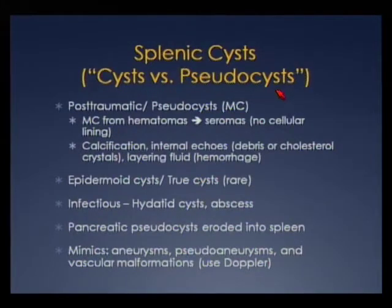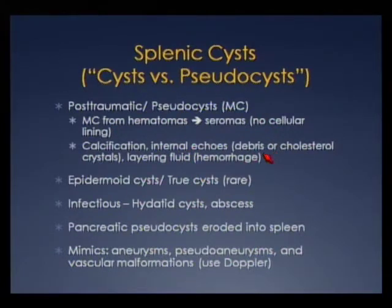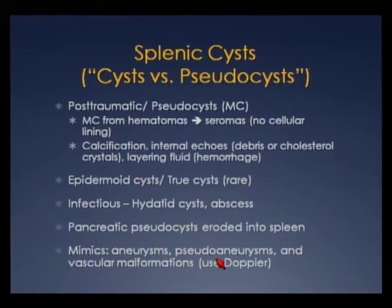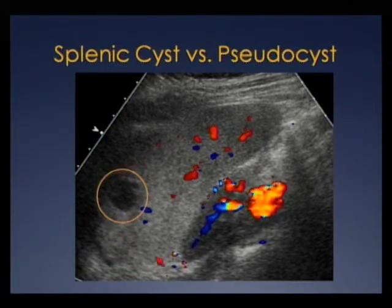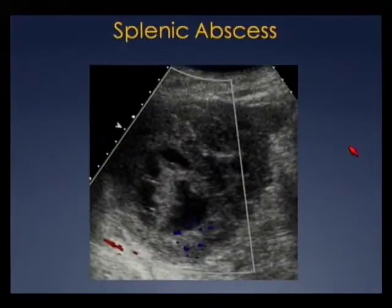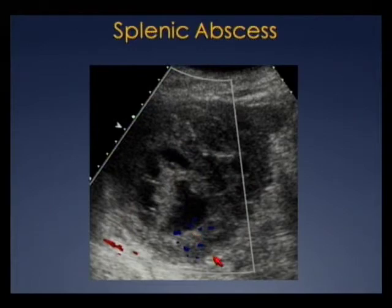Splenic cysts versus pseudocysts — most are actually pseudocysts, not true cysts, derived from hematomas that have evolved into seromas. They don't have a cellular lining and may have a complex appearance with calcifications and internal debris. Epidermoid cysts or true cysts are rare. Other etiologies include infectious cysts and pancreatic pseudocysts eroding into the spleen. Vascular lesions can mimic cysts — remember to use Doppler. Here's a hypoechoic splenic lesion with irregular margins but increased through-transmission and no Doppler flow, called a cyst versus pseudocyst. Another patient has a complex cystic lesion with debris and increased through-transmission in a sick patient — this was a splenic abscess.